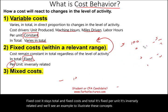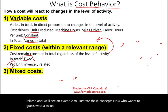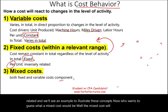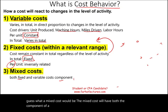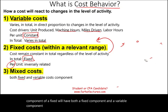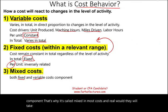Now who wants to guess what a mixed cost would be? A mixed cost has both a fixed component and a variable component — that's why it's called mixed. Most costs in the real world take the form of a mixed cost; there's nothing 100% variable and nothing 100% fixed.